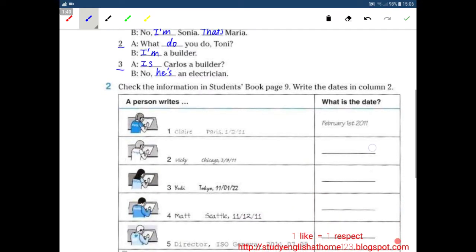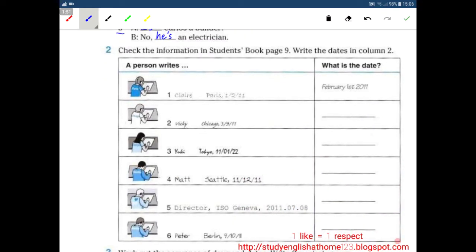Next number two. Check the information in students book page nine, write the date in column two. This is column one, this is column two. A person write number one, Claire Paris. This is February 1st 2011.